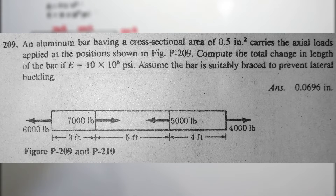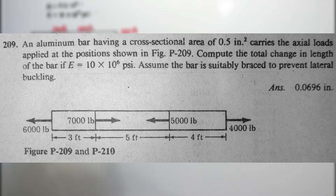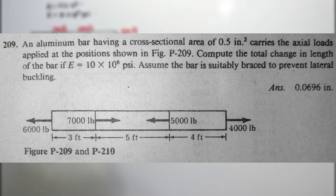Problem 209, page 40 of the book Strength of Materials, 4th Edition by Pytel and Singer. An aluminum bar having a cross-sectional area of 0.5 square inch carries actual loads applied at the positions shown in the figure. Compute the total change in length of the bar if the modulus of elasticity is 10 times 10 to the 6 psi. Assume the bar is suitably braced to prevent lateral buckling.